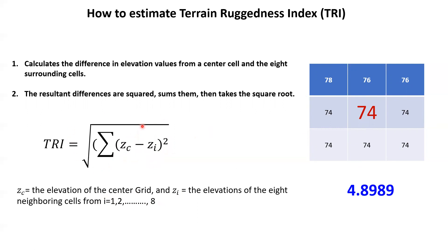Then we estimate the square root for this elevation. This is the manual estimation of TRI for this pixel — this value is exactly the same as the digital elevation model that I will use in the example. So I estimated this value manually. Now let's check how we can do it using ArcGIS.